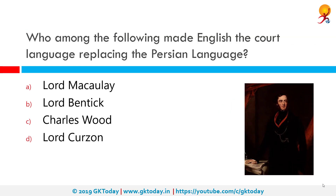Who among the following made English the court language, replacing Persian? The correct answer is Lord Bentinck. Lieutenant General Lord William Henry Cavendish Bentinck, known as Lord William Bentinck, was a British soldier and statesman who served as Governor General of India from 1828 to 1835.